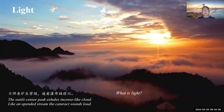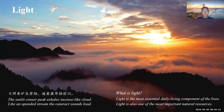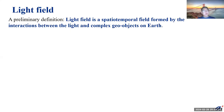People having different backgrounds and perception may have different answers to this question. People from physics may have an entirely different understanding of light compared to us in geography. In my personal opinion, light is the most essential daily living complement over our lives. Also, light is one of the most important natural resources. So we want to have an in-depth understanding of light, and at least we need to understand this light field. I give a preliminary definition: a light field is a spatial temporal field formed by the interactions between the light and the complex 3D objects on Earth.